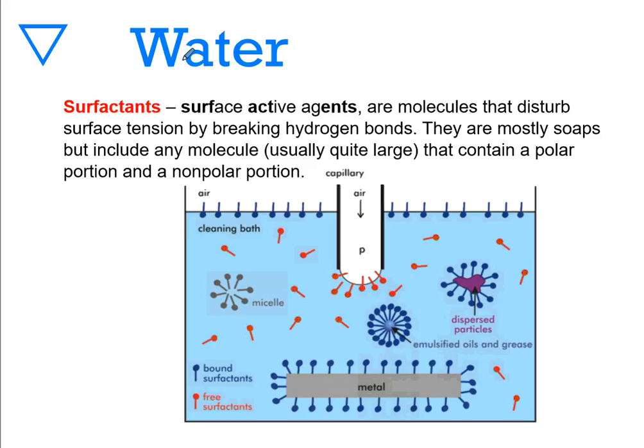Surfactants are another key substance that work with water. Surface active agents are able to break surface tension because they are very polar large compounds typically. This would be something like a soap. They're molecules that disturb surface tension by breaking hydrogen bonds. They're mostly soaps but include any molecule that are usually quite large that contain a polar portion and a nonpolar portion.